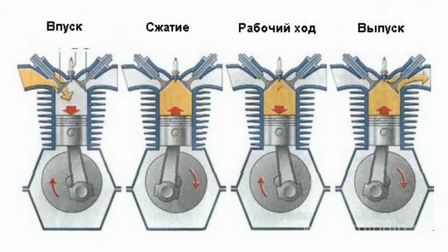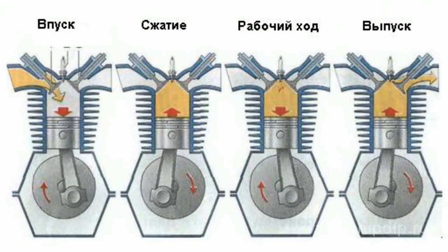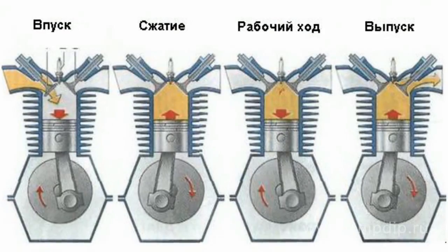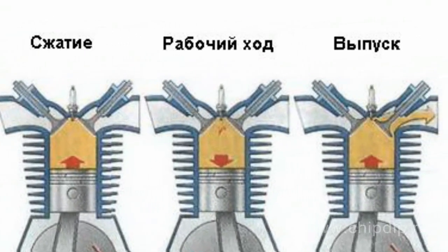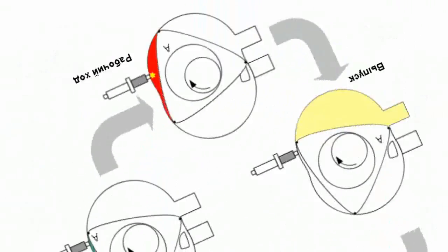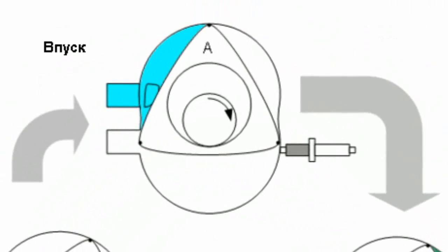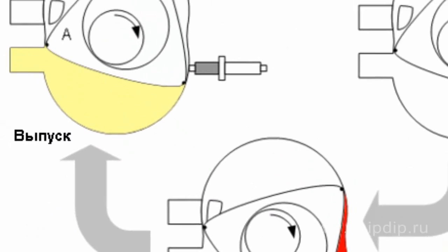The rotary engine is a combustion engine, similar to a reciprocating motor, but it works in a different way. Four processes — admission, compression, combustion stroke, and emission — occur in one and the same cylinder in a reciprocating motor. The rotary engine also performs four cycles in one and the same chamber, but each cycle takes place in a separate section of the chamber.